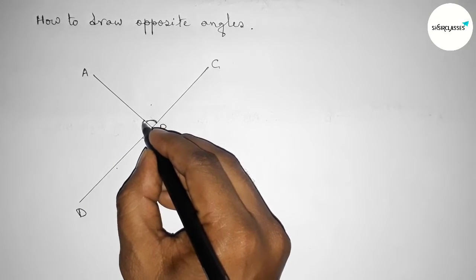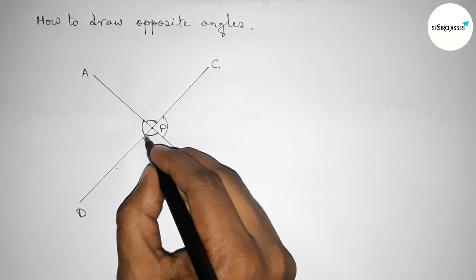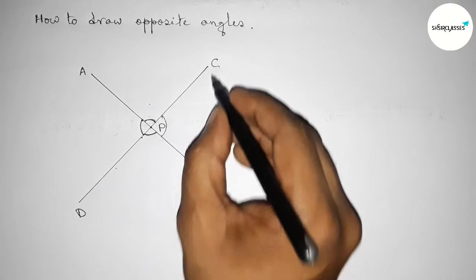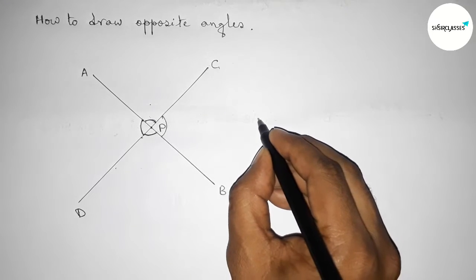Similarly, this angle and this angle are equal and opposite. So these are two opposite angles.